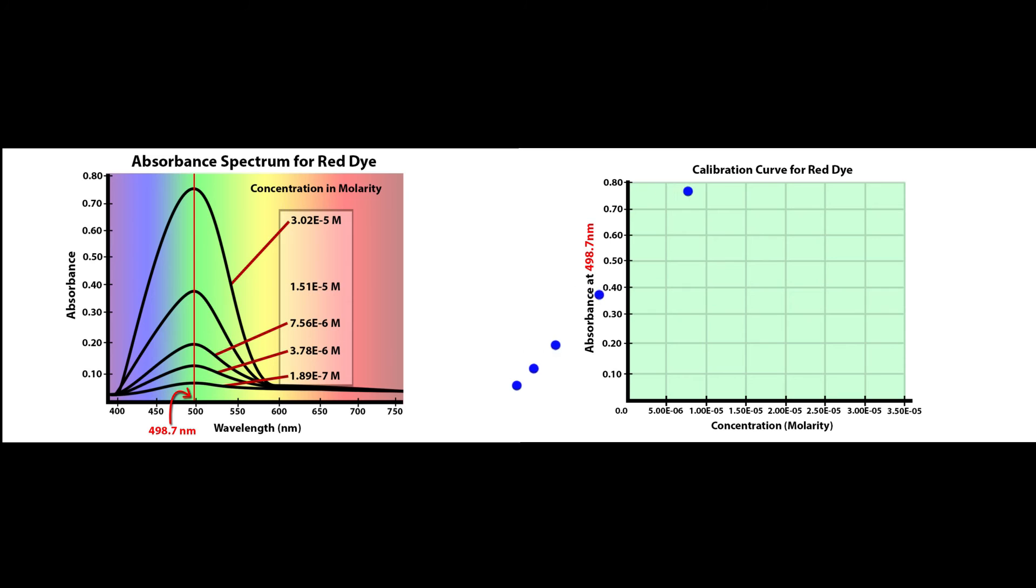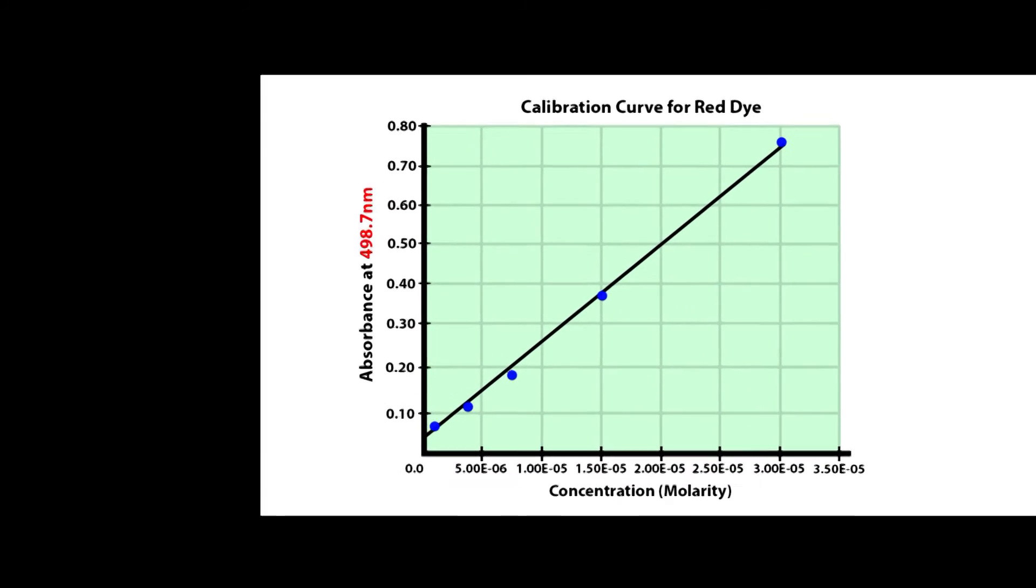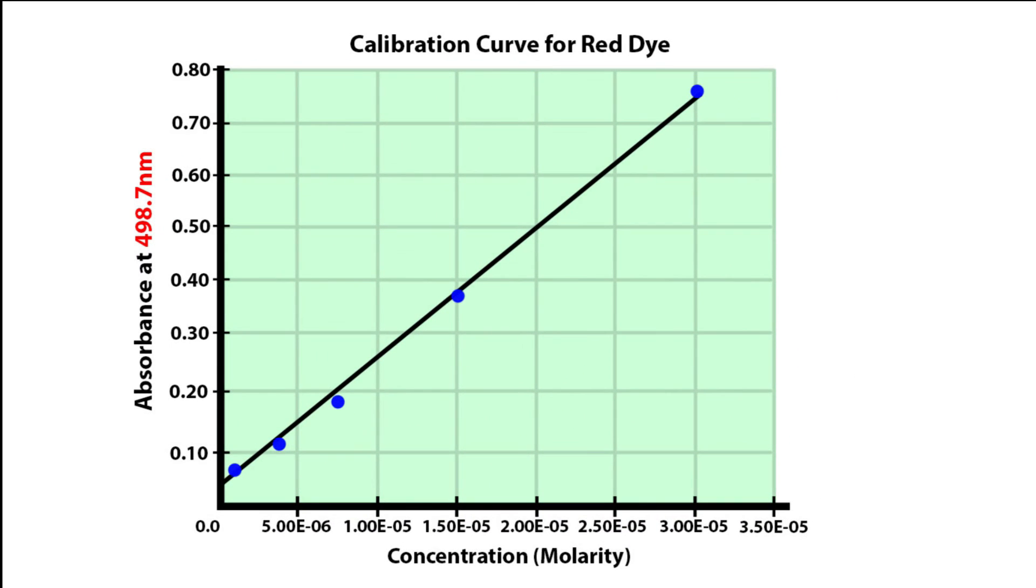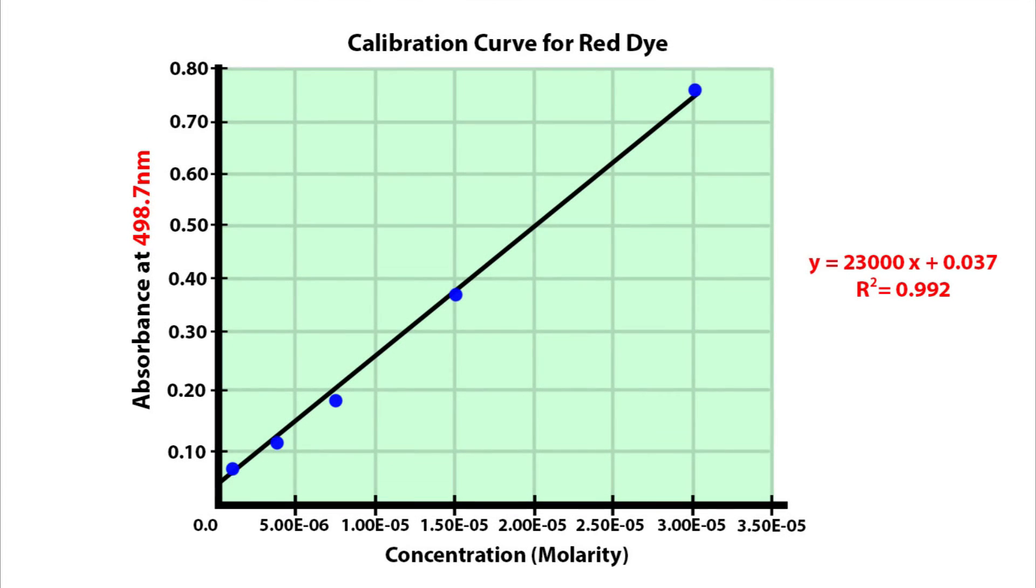This would be a plot of your absorbance at your analytical wavelength versus the concentration of your substance in molarity. Notice your y-axis is the exact same, but it's at a specific wavelength. This should make a straight line. Don't forget to include the equation of the best fit line and the correlation coefficient, the r-squared value, on your graph.